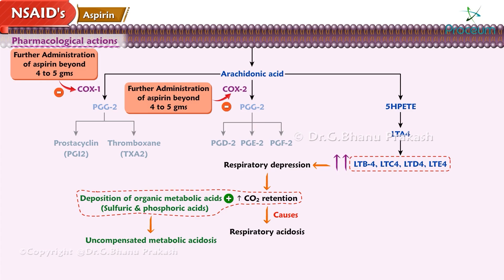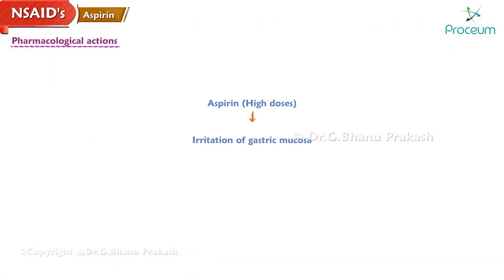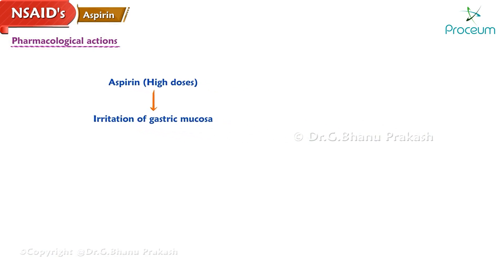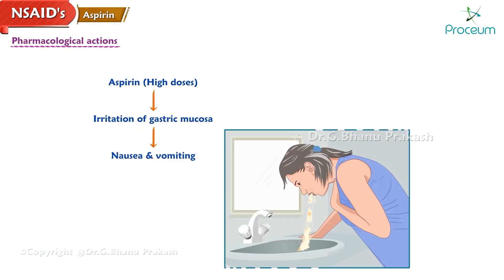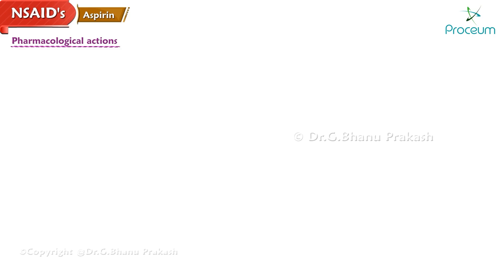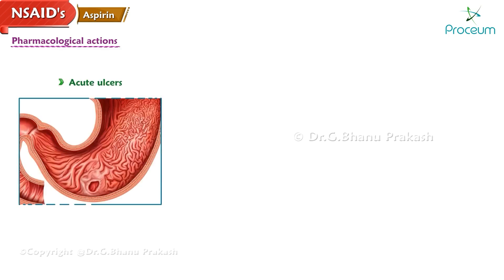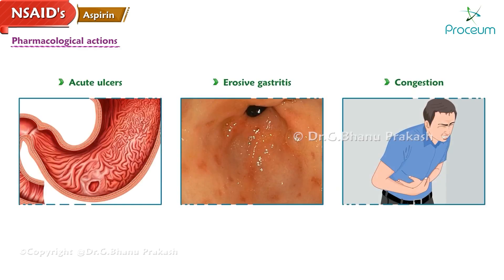Further accumulation of these acids occurs due to decreased renal function because of renal arteriolar vasoconstriction. Irritation of gastric mucosa occurs following aspirin ingestion, which can lead to nausea and vomiting. At high doses, gastric toxicity occurs following ion trapping in the gastric mucosal cell, and may cause acute ulcers, erosive gastritis, congestion, microscopic hemorrhages, occult blood loss, and hematemesis.